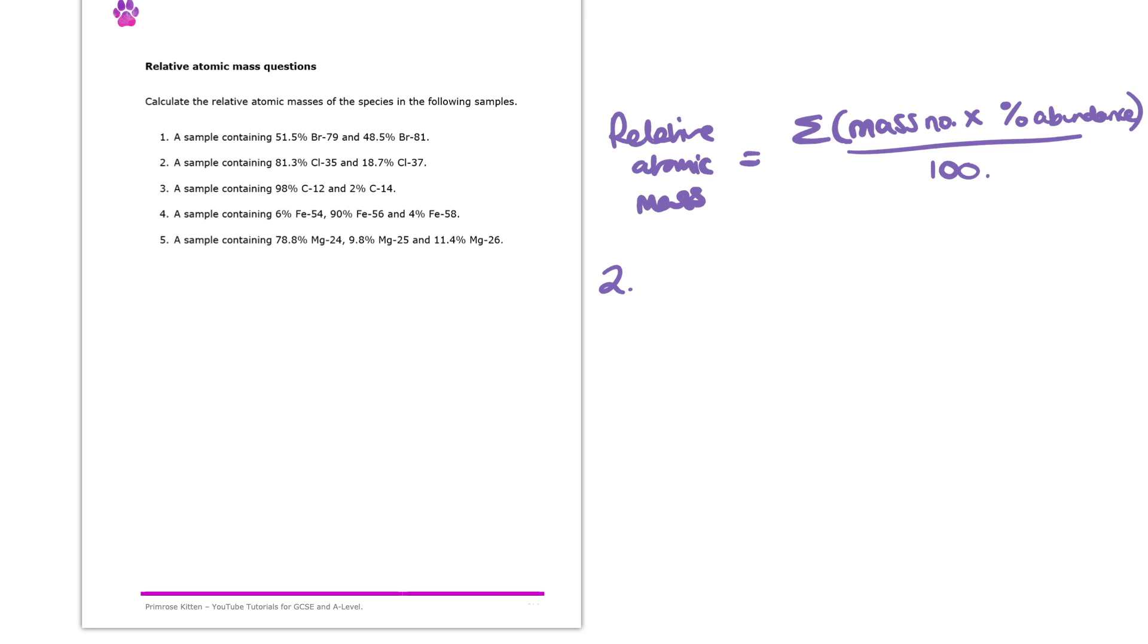So let's give this calculation a go. So in this case, the relative atomic mass is going to be equal to 35 times by 81.3 plus 37 times by 18.7. And then we will divide that all by 100.